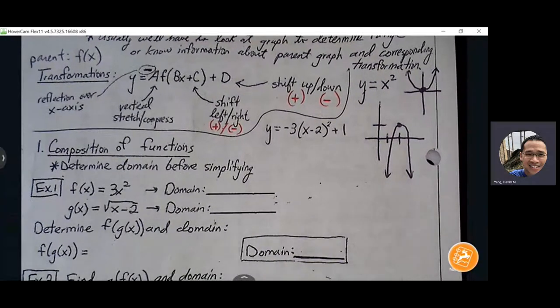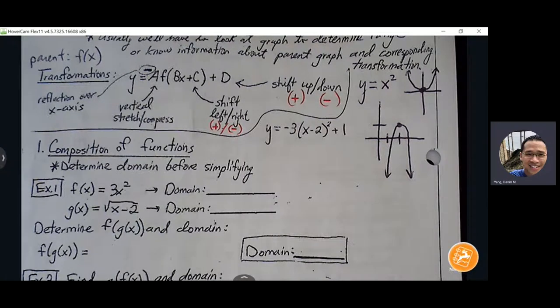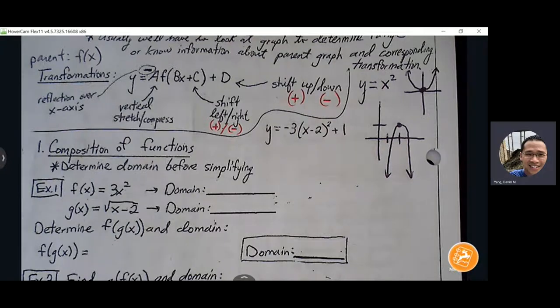That's just a quick example of how we can apply transformations and get a ballpark picture of the graph without having to look at every single point.